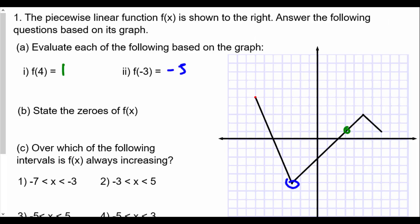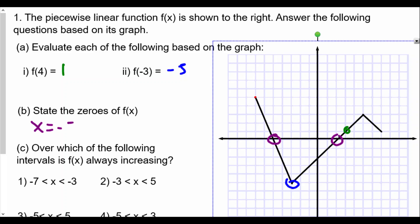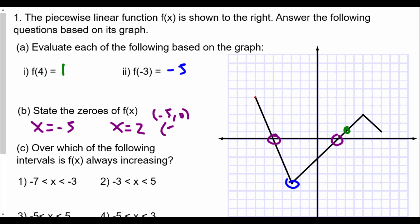Looking at the graph, we can see it crosses the x-axis in two places. One is at x = -5, giving us the coordinate (-5, 0), and the other is at x = 2, giving us the coordinate (2, 0). So the zeros of the function are x = -5 and x = 2, also known as the x-intercepts.